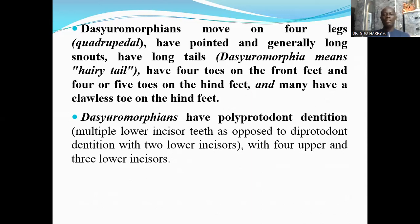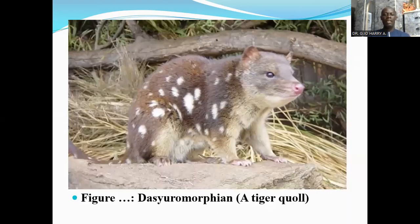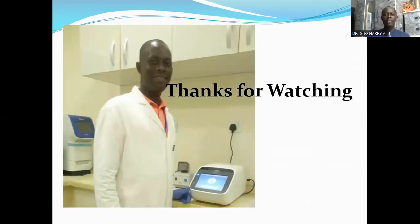The Dasyuromorphians have polyprotodont dentition, meaning they have multiple lower incisor teeth, as opposed to diprotodont dentition — with four upper and three lower incisors. Here is a Dasyuromorphian belonging to the order Dasyuromorpha, called the tiger quoll. In our next lecture, we will look at the placental mammals and the subclass Eutheria, also called Placentalia.